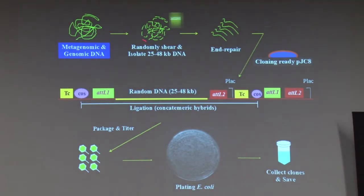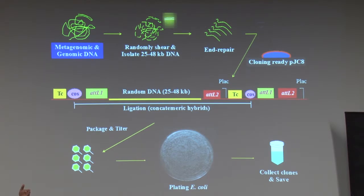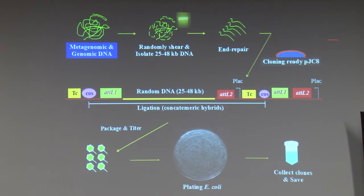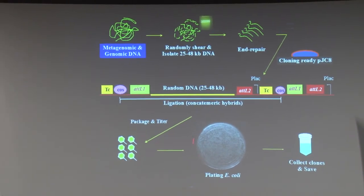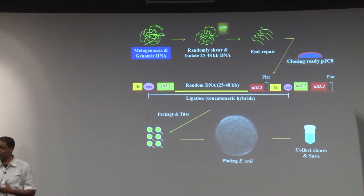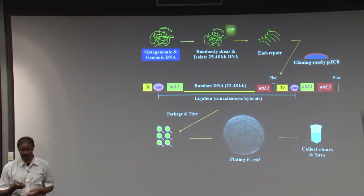Basically, we take the environmental DNA, randomly shear it to get very large fragments. This is important because we want to clone large segments of genomes containing all the contiguous genes for a certain region — all in single fragments. We end-repair them to make sure they're ready to clone into vectors. These vectors are then introduced into E. coli, collected, and frozen in the freezer, where they're available for any downstream process.